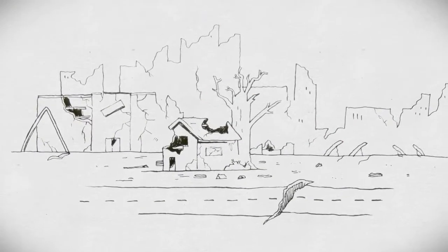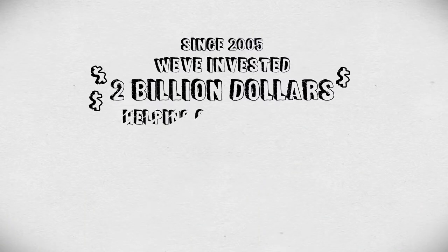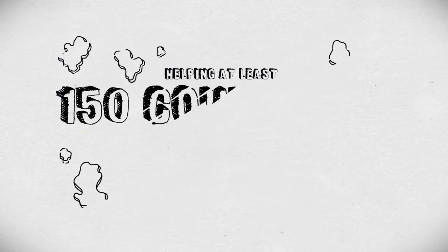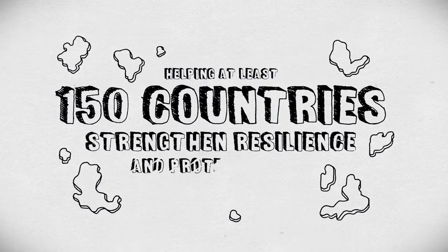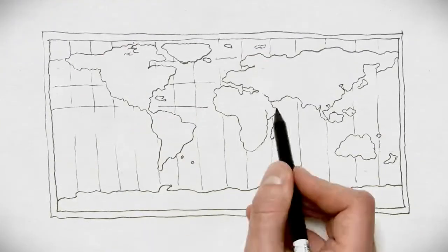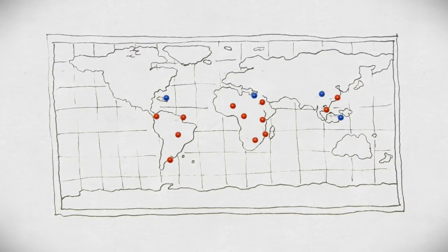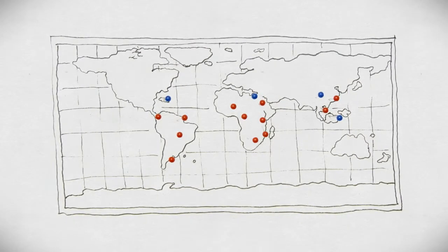This helps turn this into this. Since 2005, we've invested nearly $2 billion, helping our partners reduce the risk of disasters, helping at least 150 countries strengthen resilience and protect people and communities. And in 2015, we're working to expand our work even further, targeting dozens of countries with increased technical support.